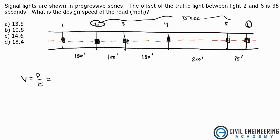So your distance between lights 2 and 6 is 100 feet plus 180 feet plus 200 feet plus 75 feet, all divided by 35 seconds. And that gives you 555 feet divided by 35 seconds.